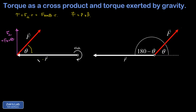F is the force vector applied at that point. The magnitude of a cross product is given by the magnitudes of the two vectors multiplied by the sine of the angle between them.